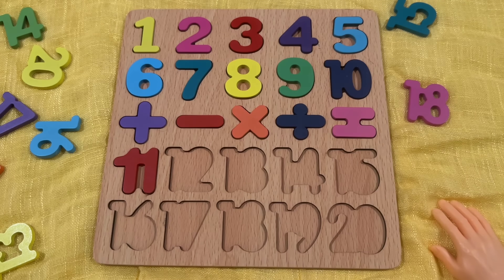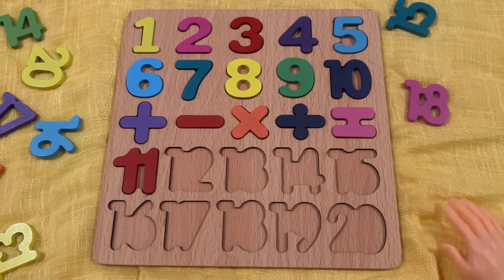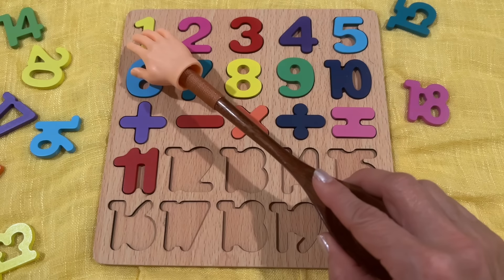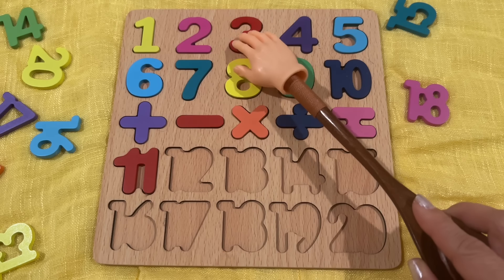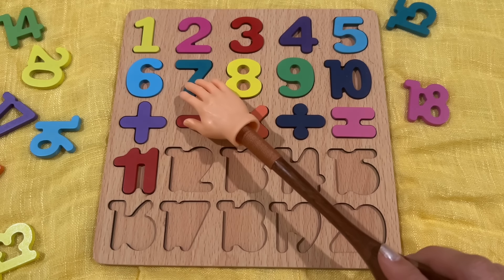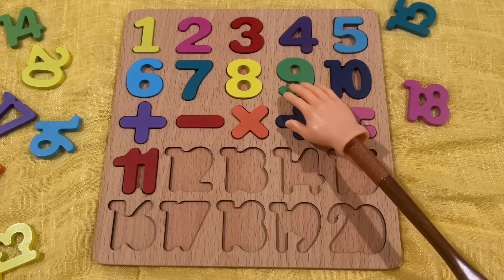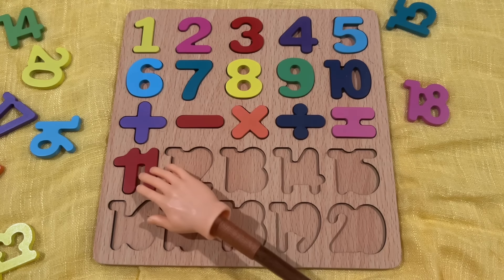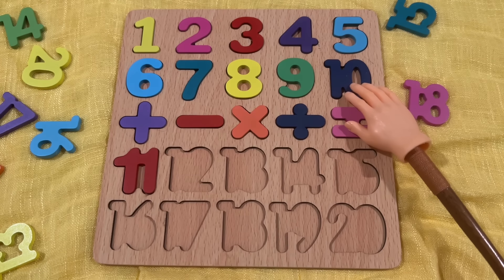So, the most important thing that you need to remember are the 10 numbers. 1, 2, 3, 4, 5, 6, 7, 8, 9, 10. For 11, we say 십일.